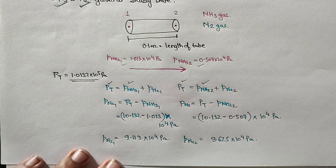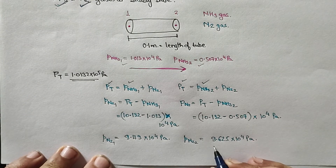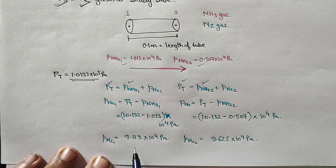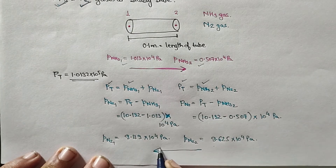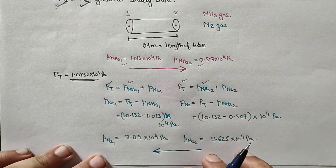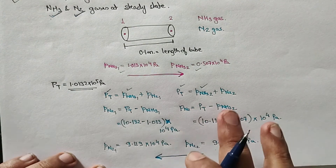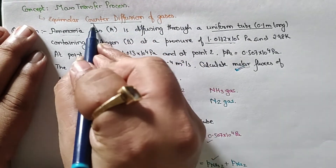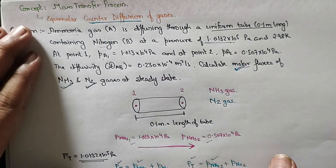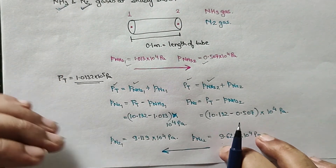Now notice one important thing: the partial pressure of nitrogen is higher at point 0.2 and lower at point 0.1. So the diffusion of nitrogen occurs in the direction from 0.2 toward 0.1 — opposite to ammonia. When one component diffuses in one direction and the other diffuses in the opposite direction, that is called counter diffusion. That is why the name equimolar counter diffusion comes — both gases travel in opposite directions to each other.